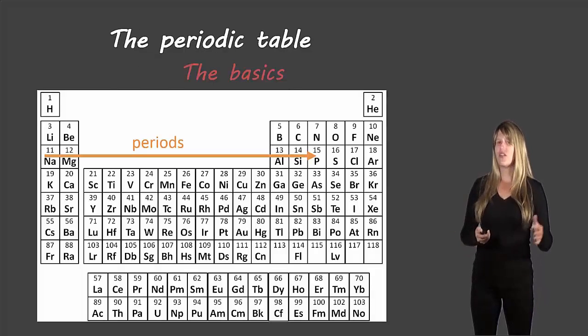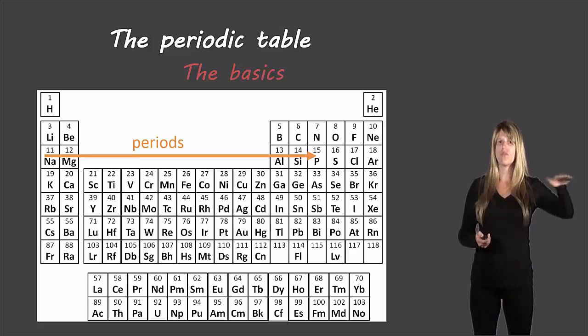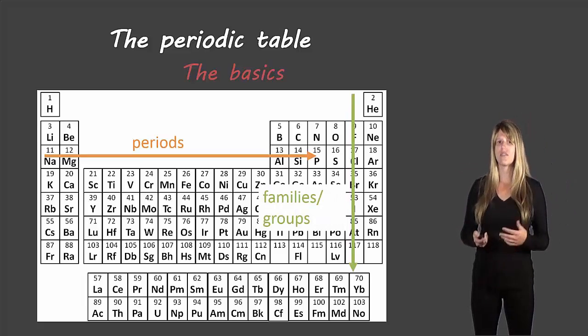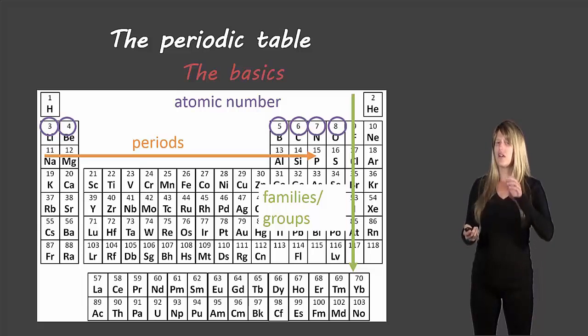Let's start off with the basics. Along the rows we call these periods, and along the columns we call these either families or groups. Either of those terms are interchangeable. If you look in each of the little boxes of the elements, they have a number - it's a whole number, which means no decimals, and they're actually sequential: one, two, three, four, and so on. This is the atomic number.